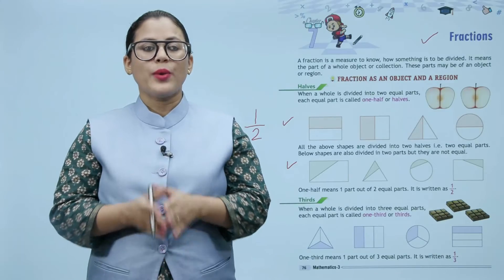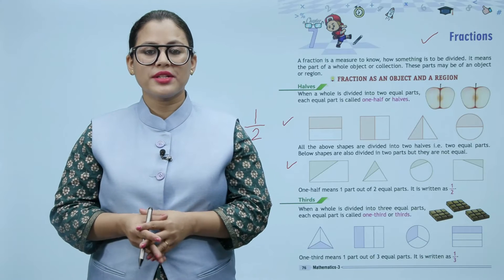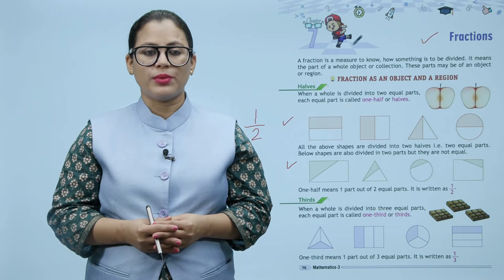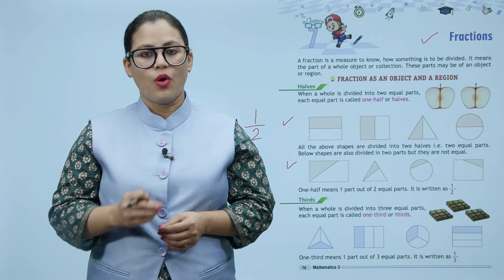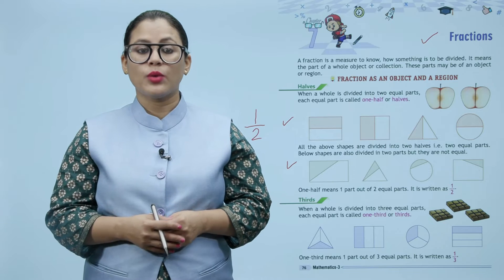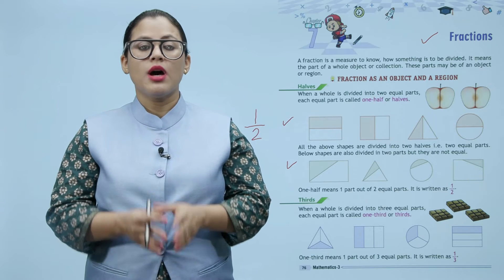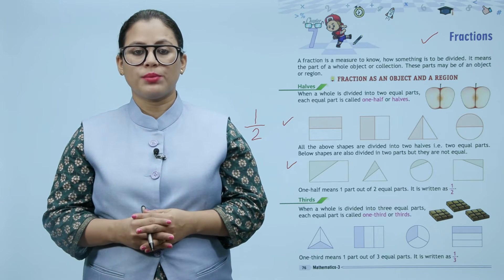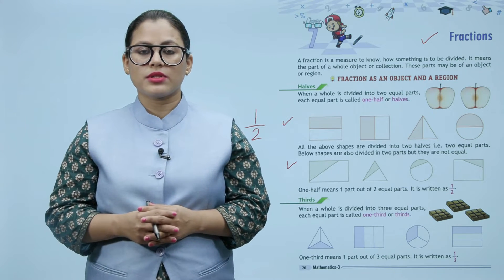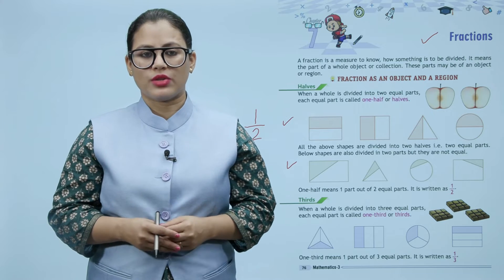Thirds: when a whole is divided into three equal parts, each equal part is called one-third. One third means one part out of three equal parts. It is written as one by three.